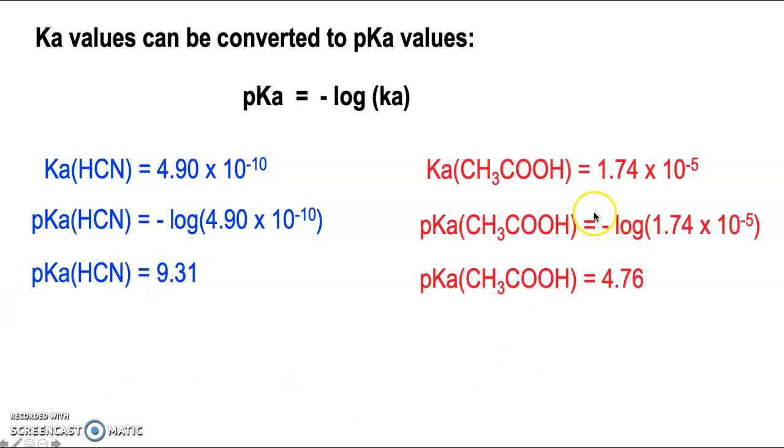Here's another one. So I've taken the Ka value for ethanoic acid, taken the negative log of that value, and I've got my pKa. What I want to show you here is that the smaller Ka produces a larger pKa number. And vice versa. The larger the Ka value, then the smaller the pKa value.